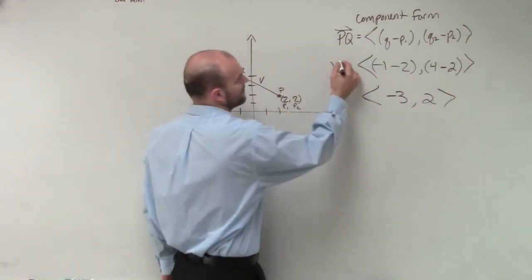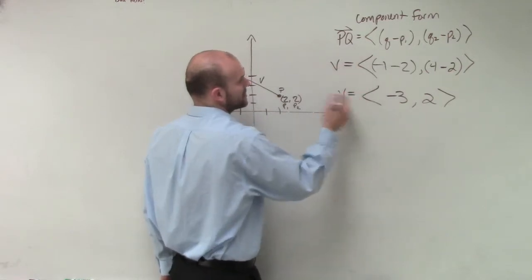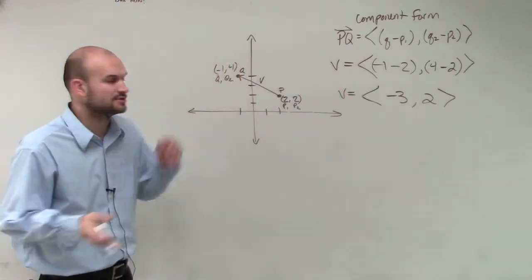So we say component form of your vector, which we're going to call V. I was just using the P over Q to represent their initial and terminal point.